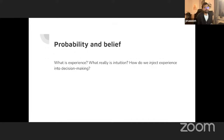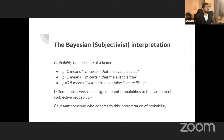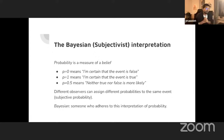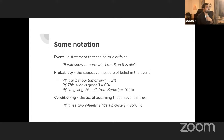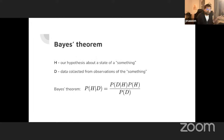How do we use this practically? In Bayesian interpretation, probability is a measure of belief, and it's subjective — different observers can assign different probabilities to the same event based on their personal experience. D is the data we collect — for a coin flip, D is the number of heads and tails.